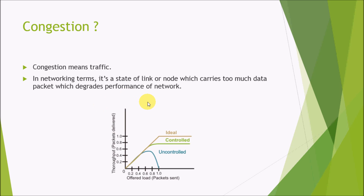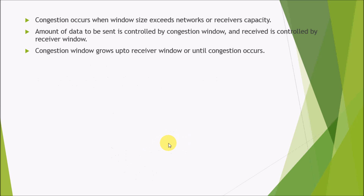Now we can look at this graph. If congestion doesn't occur, then the packets delivered gradually increase. But when congestion occurs, they decrease at a point. So we need to control the congestion in order to conserve the speed or the packet delivery in the network.